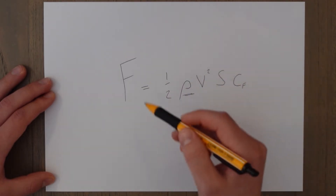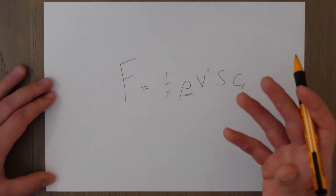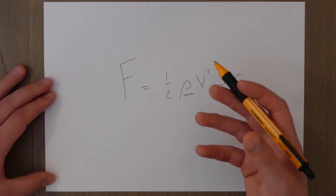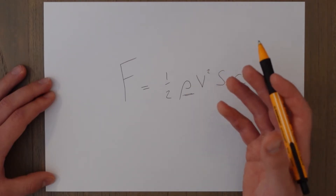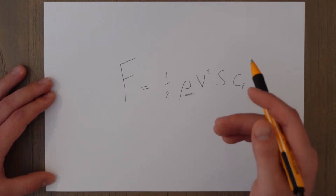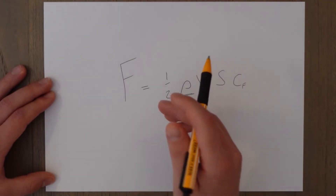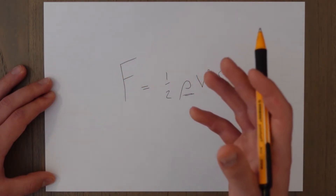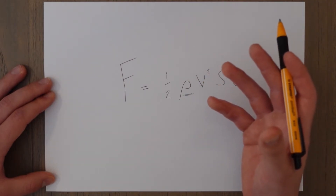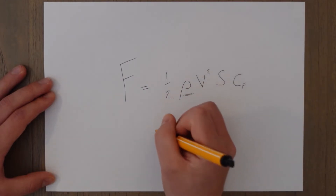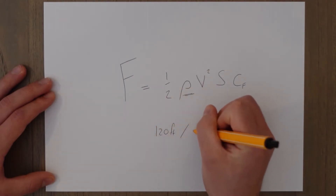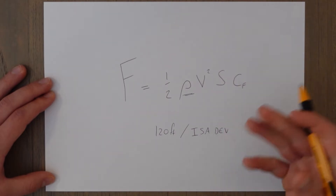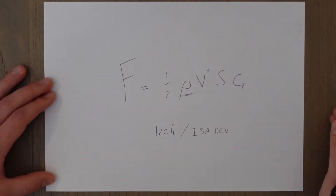What we can do to help when using these equations and calculating aircraft performance is to use something called the density altitude. This is the equivalent density in the international standard atmosphere where the current density we have occurs. It is calculated from the current temperature and pressure conditions. You can calculate it using the CRP5 computer, or use a rough estimate of 120 feet per degree of ISA deviation, which you add or subtract from the pressure altitude to find the density altitude.